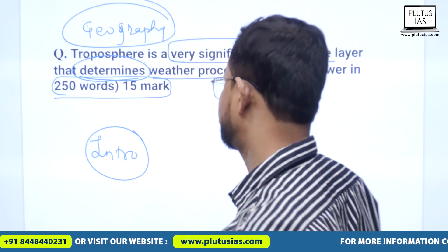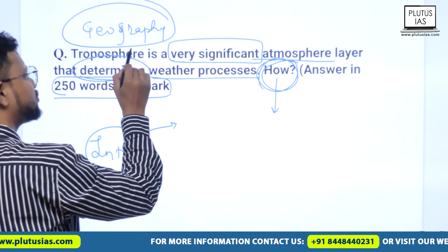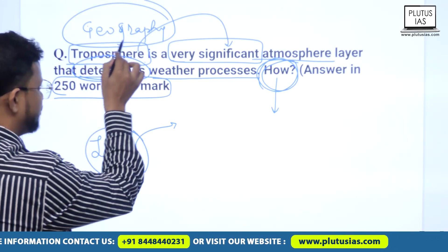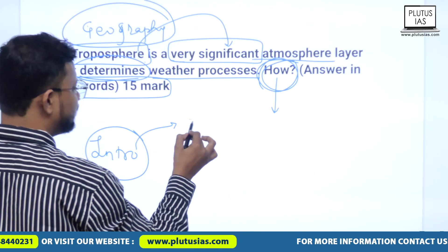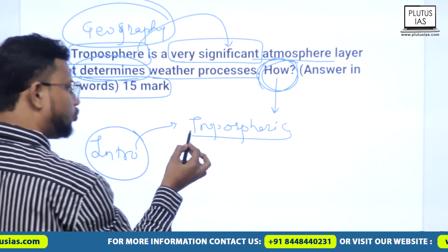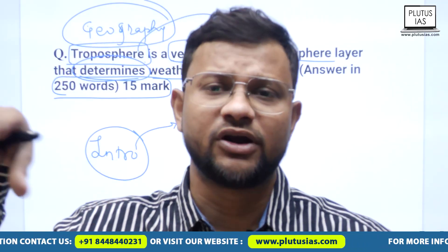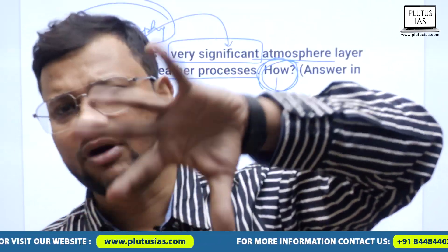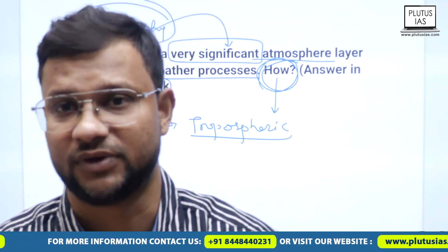For the introduction, since the question is basic theoretical geography, you can start with the significance: that the troposphere is known as the 'all weather layer' or weather process layer. If you want, you can draw the atmospheric layers as well — troposphere, stratosphere, mesosphere — draw it and show that you have that idea too, because the question is theoretical geography in nature.